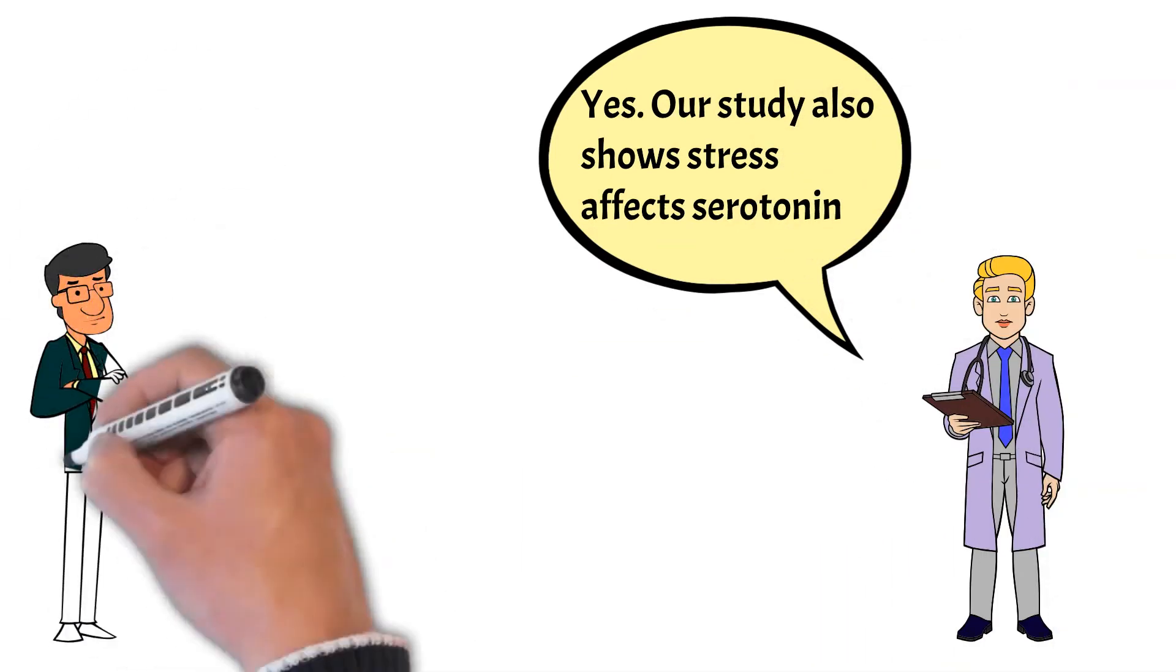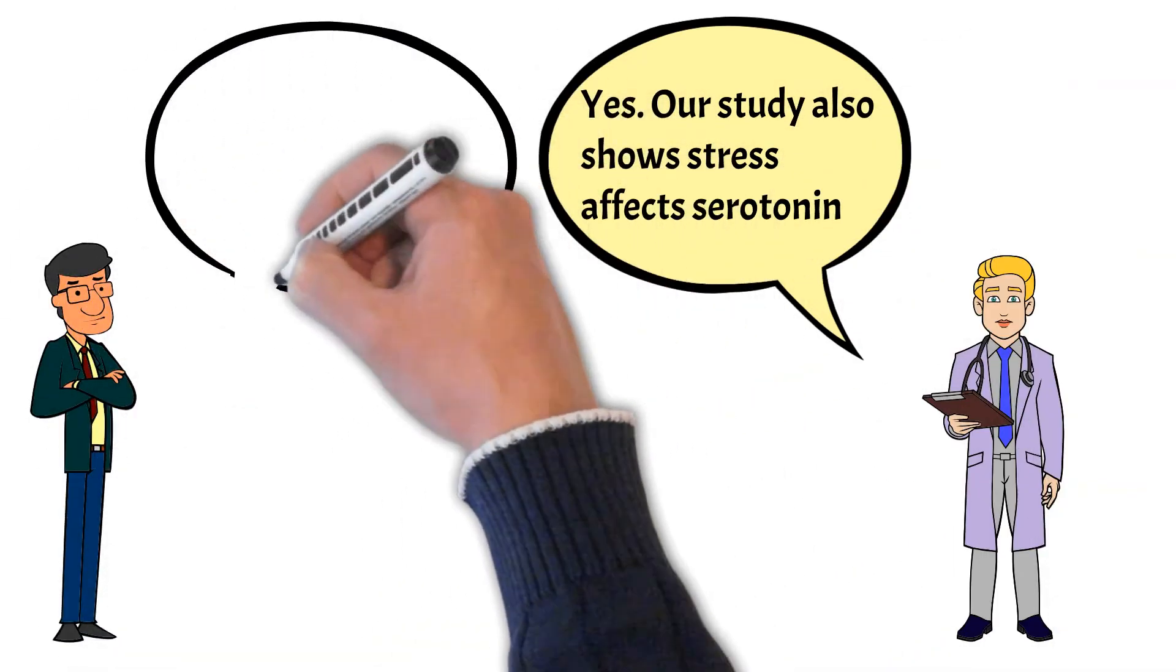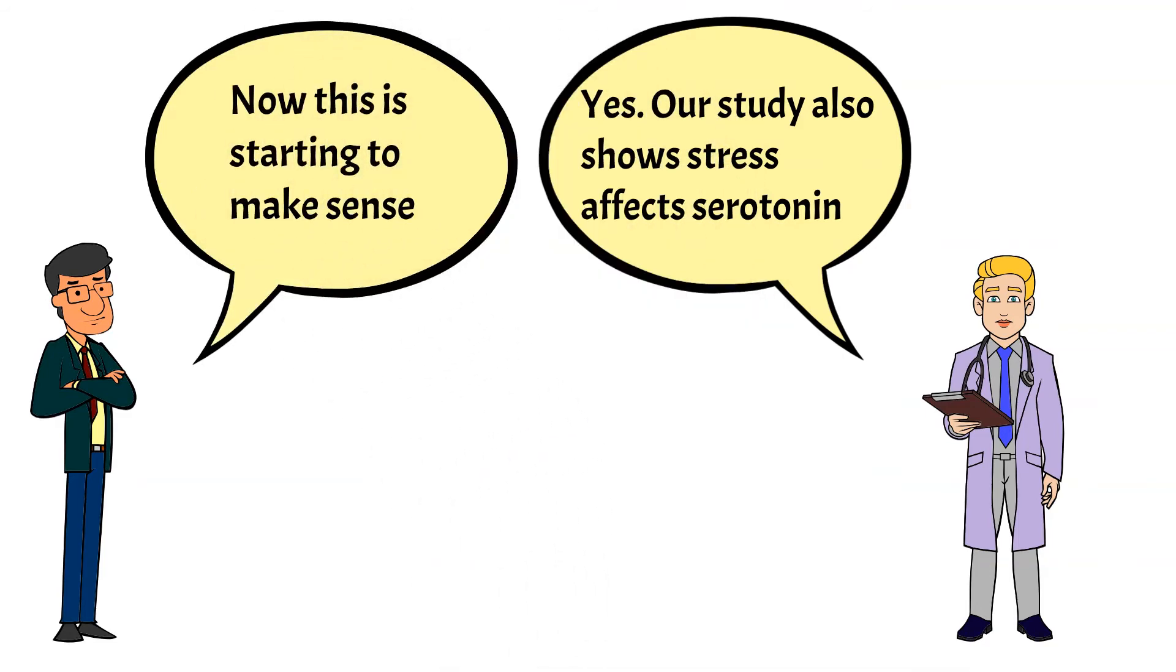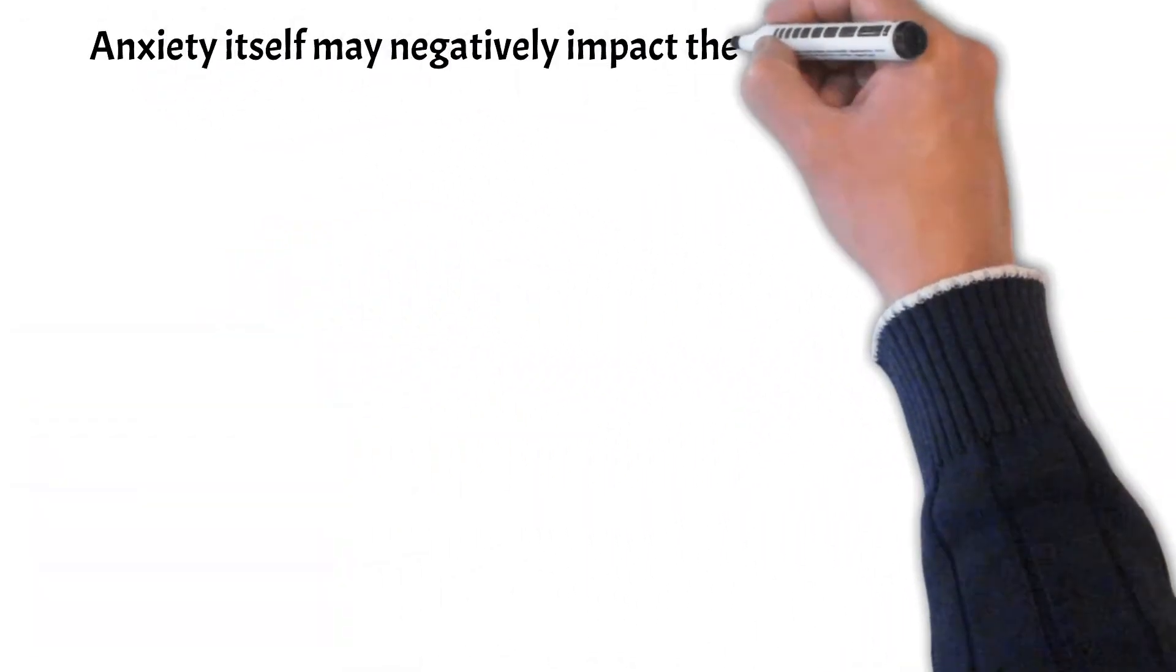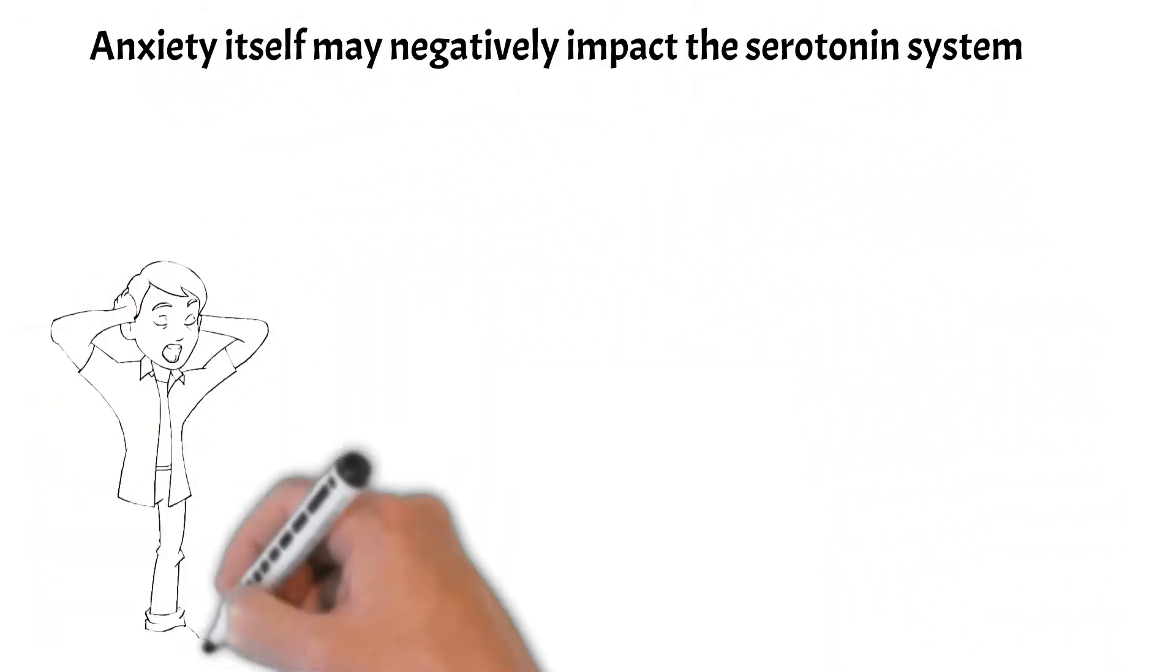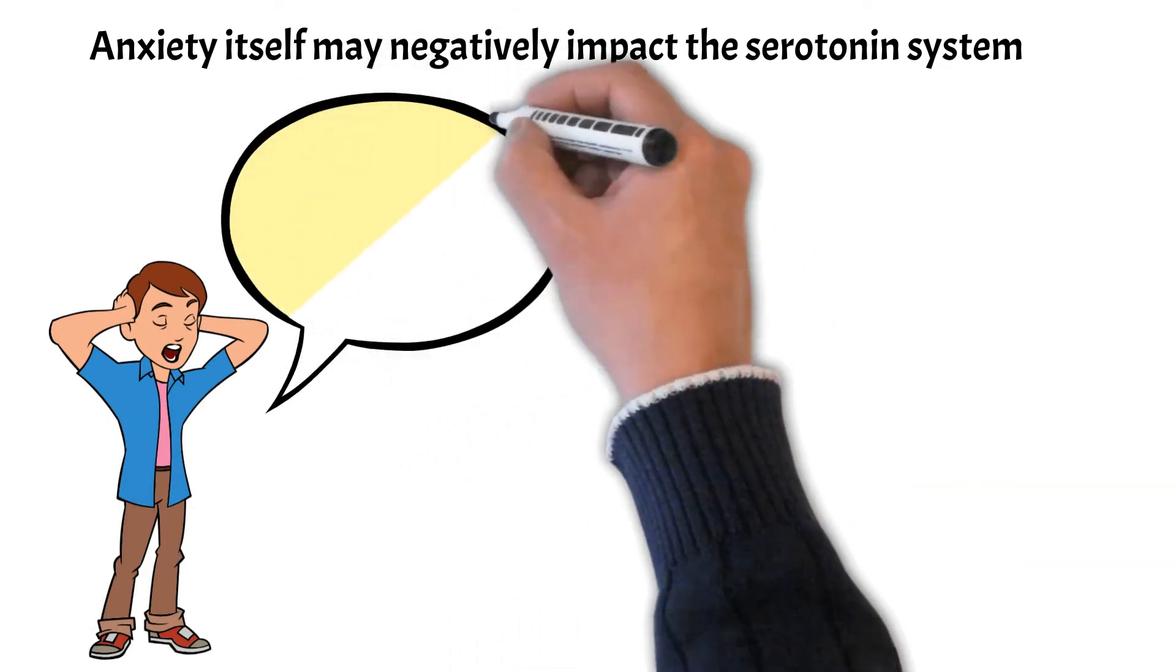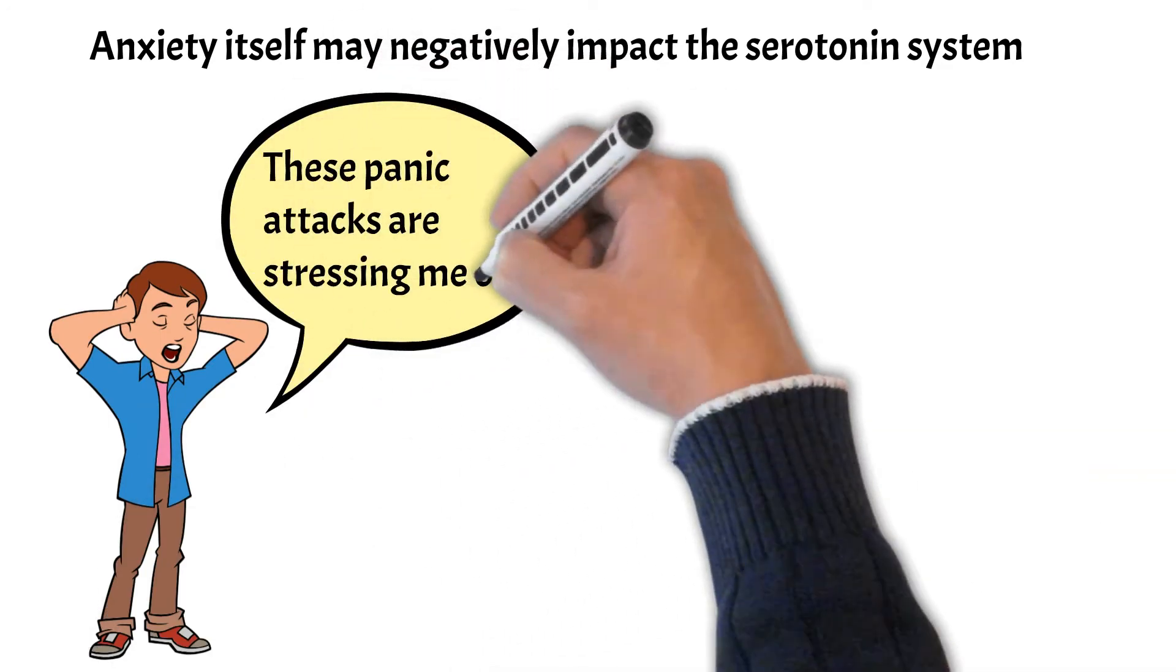Now, finally, something is starting to make sense to me, because many anxiety disorders start after a period of stress or a traumatic event. So if stress causes serotonin problems in the part of the brain that evaluates danger, this will make the patient more anxious and therefore more stressed, which in turn further messes up the serotonin system.